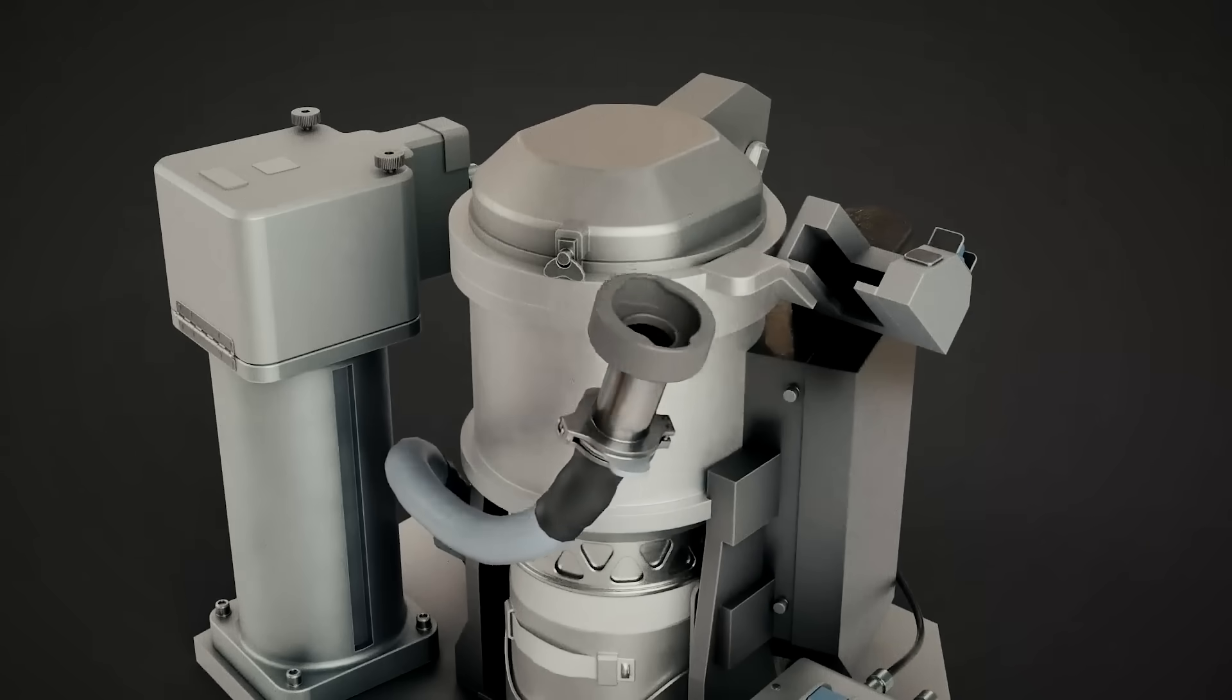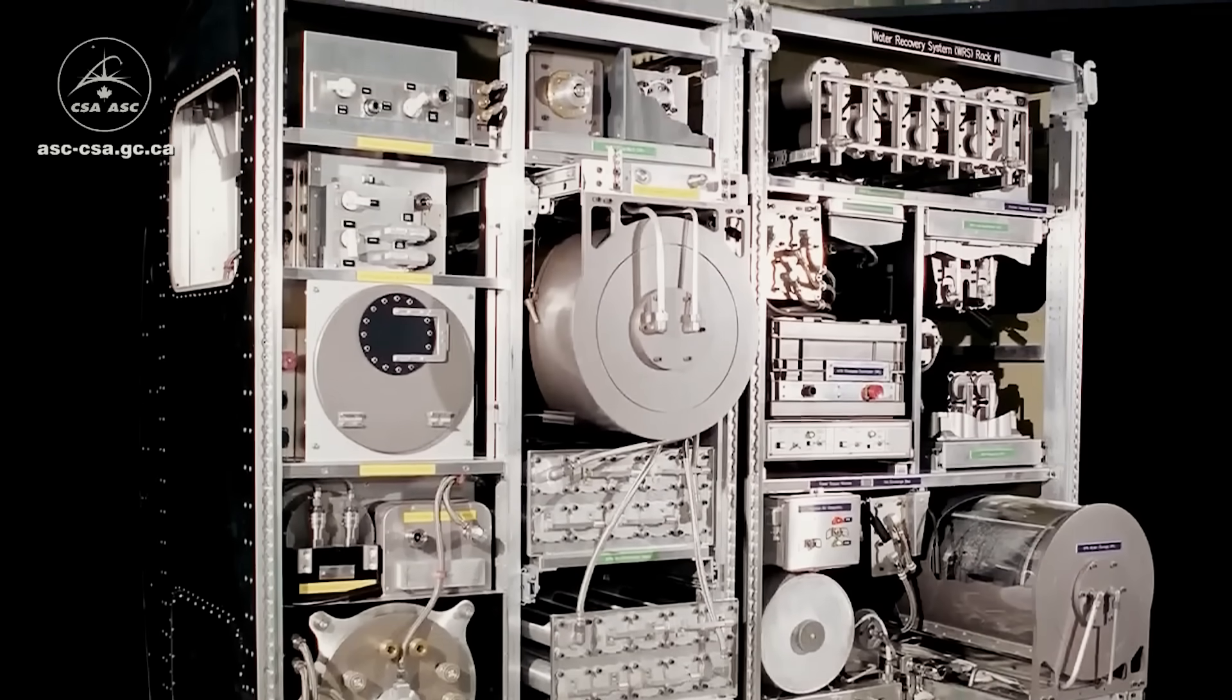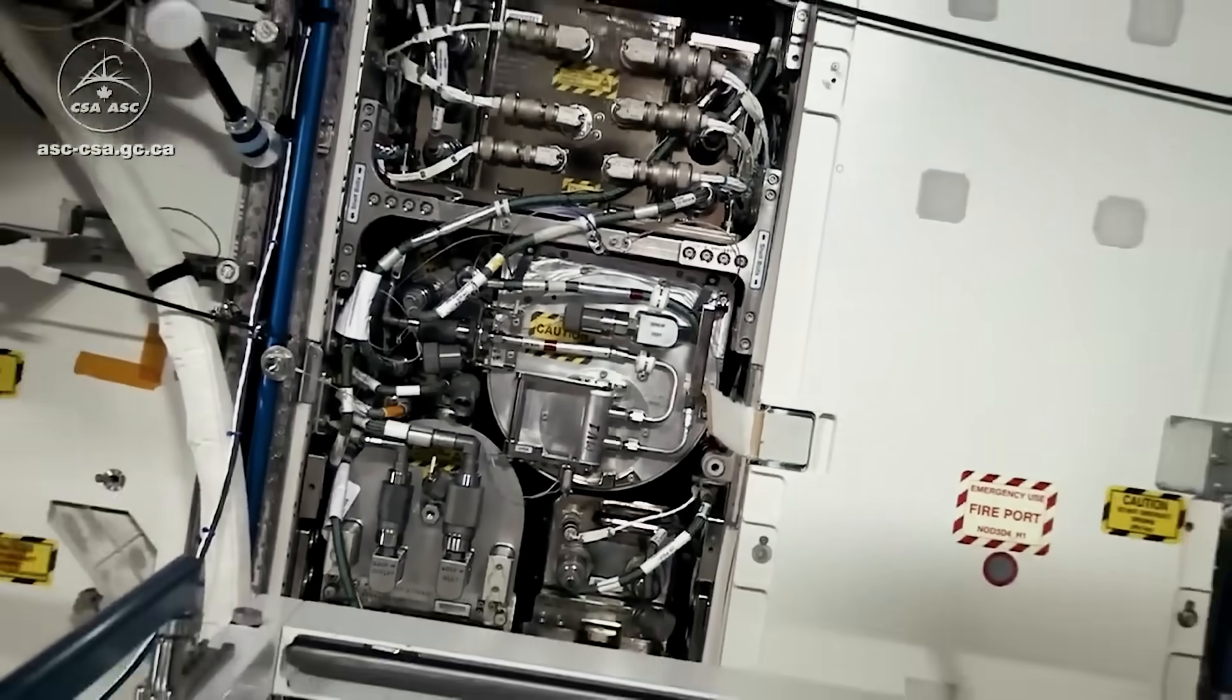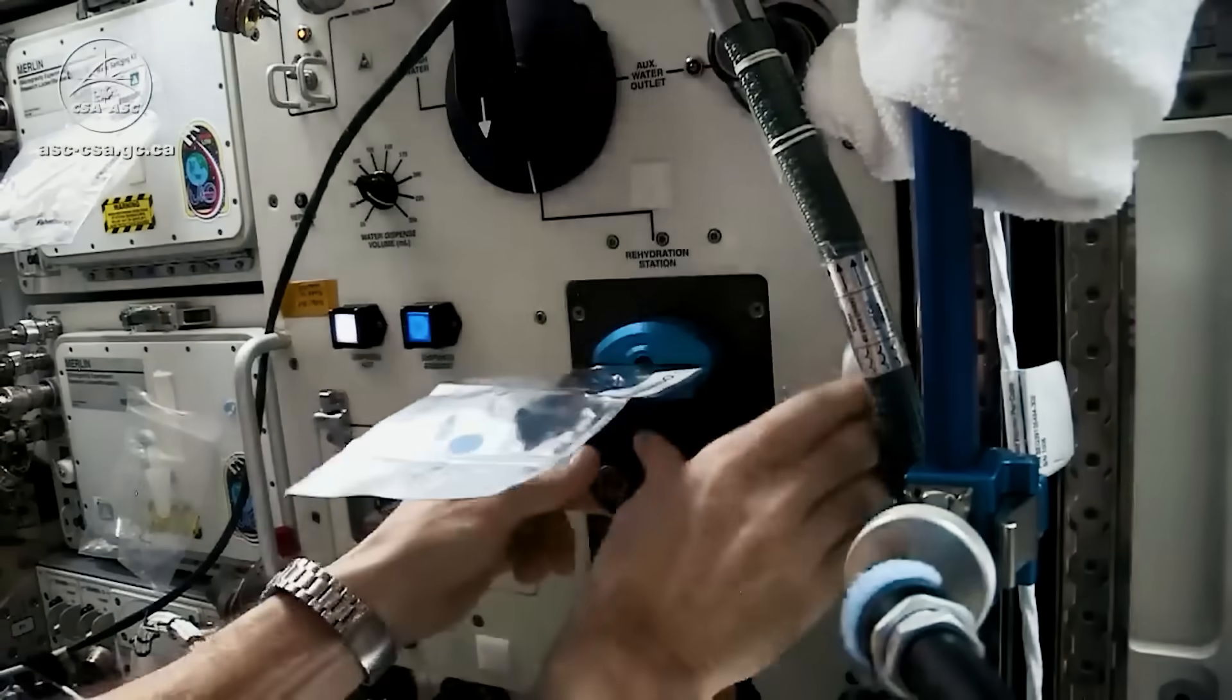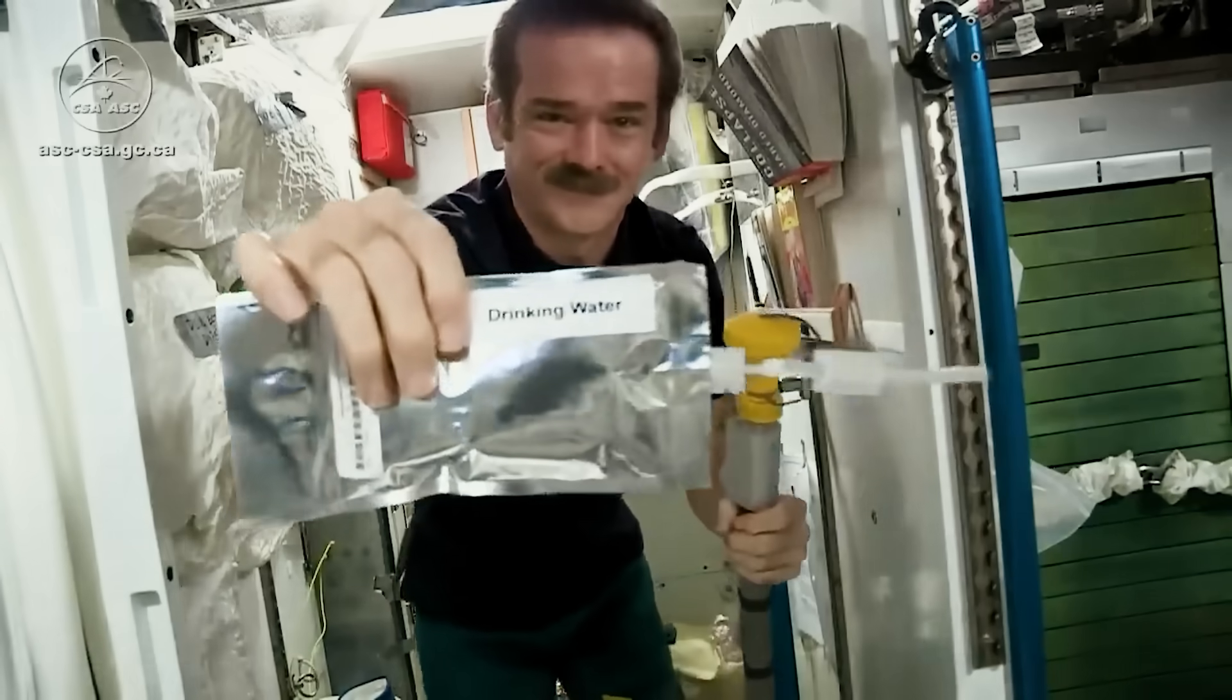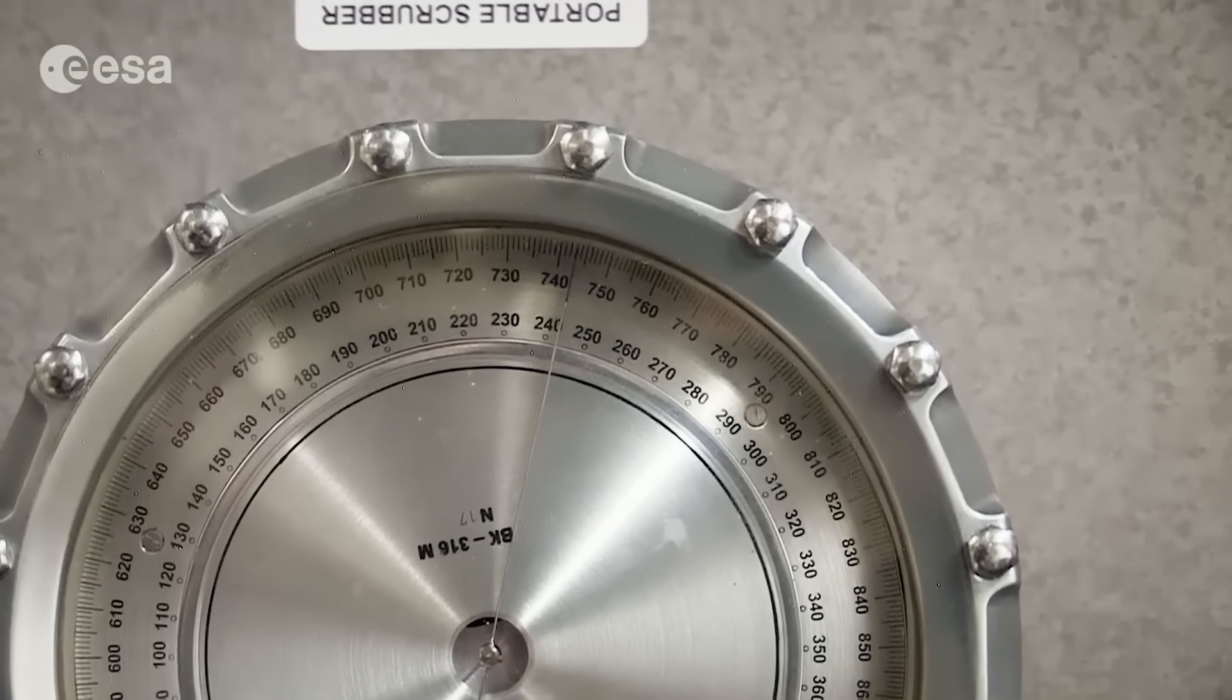For urine, astronauts use a funnel attached to a vacuum hose designed for both men and women. Suction pulls the liquid into a tank, where it's filtered and recycled into drinking water. On average, 70% of all water on the ISS is recycled. It would be impossible to operate in space without a closed water cycle. So yeah, you drink your own pee, and everyone else's pee. But you also breathe it as well. We're getting weird now, but this is fascinating.